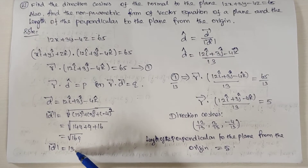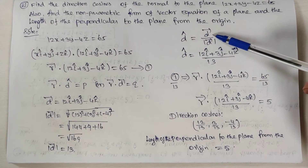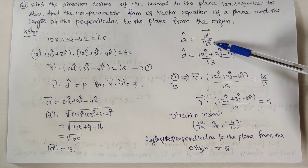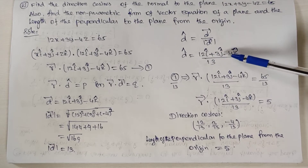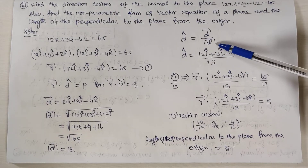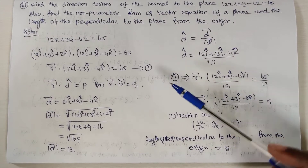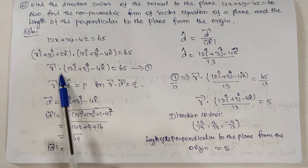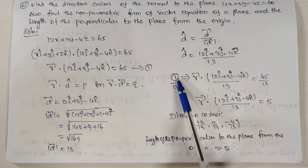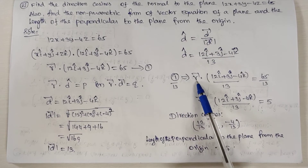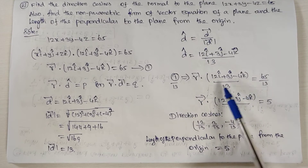The modulus of d⃗ is 13. So d̂ equals d⃗ divided by modulus of d⃗. So d⃗ = 12î plus 3ĵ minus 4k̂, the whole divided by 13. Therefore r⃗ · (12î plus 3ĵ minus 4k̂) divided by 13 is equal to 1 divided by 13 times 65. This gives the non-parametric vector equation of the plane.